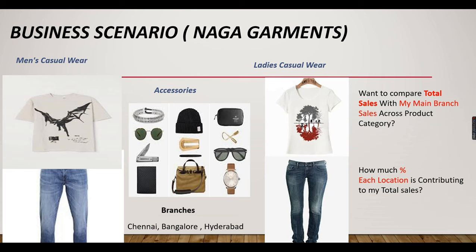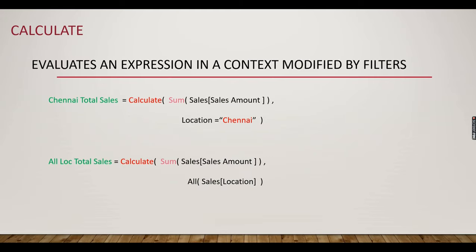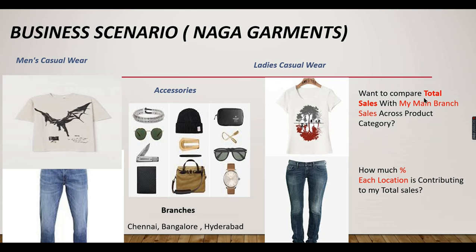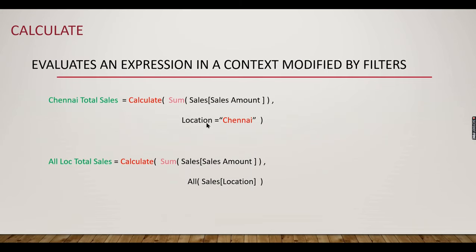If you haven't subscribed to this channel yet, hit the button right now to learn Power BI and DAX concepts. Today's topic is CALCULATE. Both of those questions can be answered using two simple DAX formulas. For the first question, Chennai total sales — he wants to compare total sales with main branch Chennai sales using an explicit internal filter inside the CALCULATE function, as we saw in a previous example.